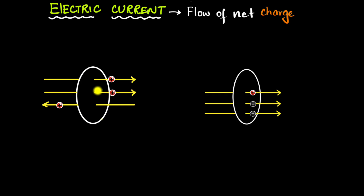Now we do have electric current — when we have a net positive charge flowing to the right, there is an electric current. Similarly, when we have net negative charges flowing to the right, we do have an electric current.